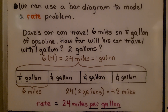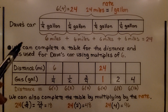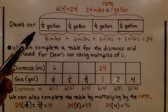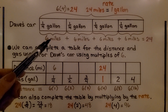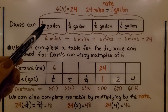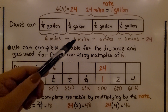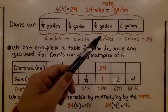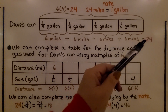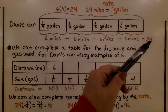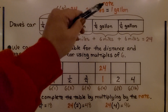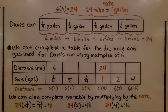We could find three gallons, four gallons — as long as we know this rate. Dave's car goes six miles on each one-fourth gallon: another six miles, another six miles, another six miles. So we know it's 24 miles for one gallon.